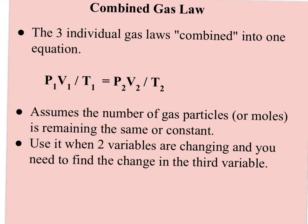So the combined gas law is really just the three individual gas laws combined into one equation. It would be P1 times V1 over T1 equals P2 times V2 divided by T2. So it assumes the number of gas particles, your moles, is still staying the same. So this means you have a gas that you're keeping in the same container but you're changing the conditions of that container but you're not letting any gas in or out of your container, your sample. So you use it when two variables are changing and you're trying to find the change in the third variable.